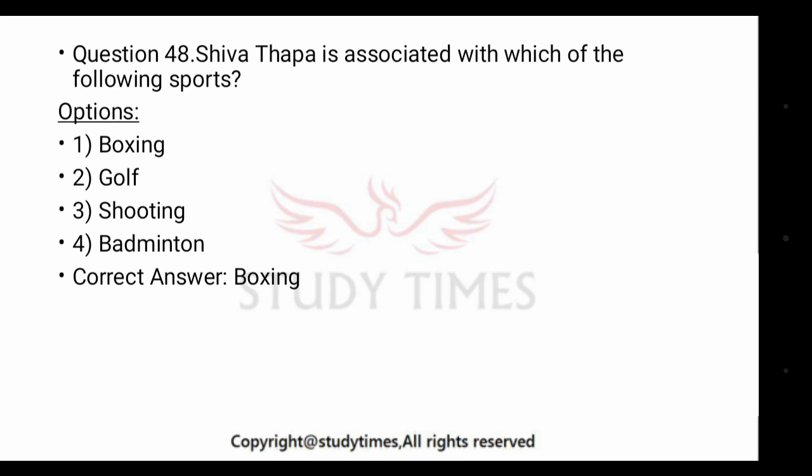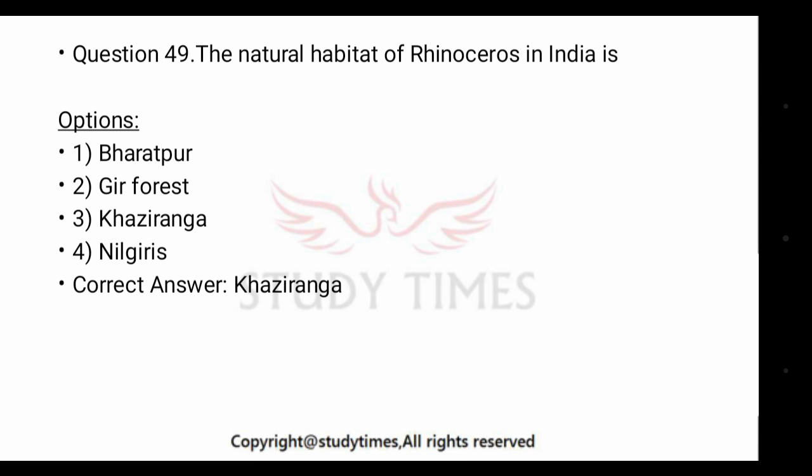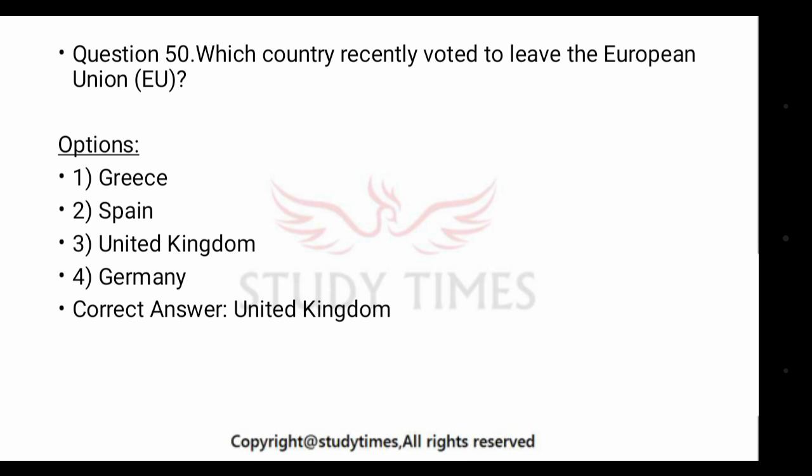The natural habitat of the rhinoceros in India is Kaziranga. The last question: which country recently voted to leave the European Union? The answer is the United Kingdom. The headquarters of the European Union is in Belgium, in the city of Brussels, and the European Union also received the Nobel Peace Prize. Thanks for watching — if you liked the video, give it a thumbs up, comment any doubts below, and share the video. Thank you so much.